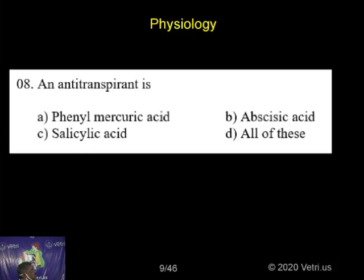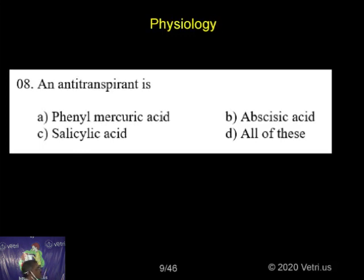What is an anti-transparent? Substances which reduce the rate of transpiration are called anti-transparents. Phenyl mercuric acid, abscisic acid, and salicylic acid are all anti-transparents.